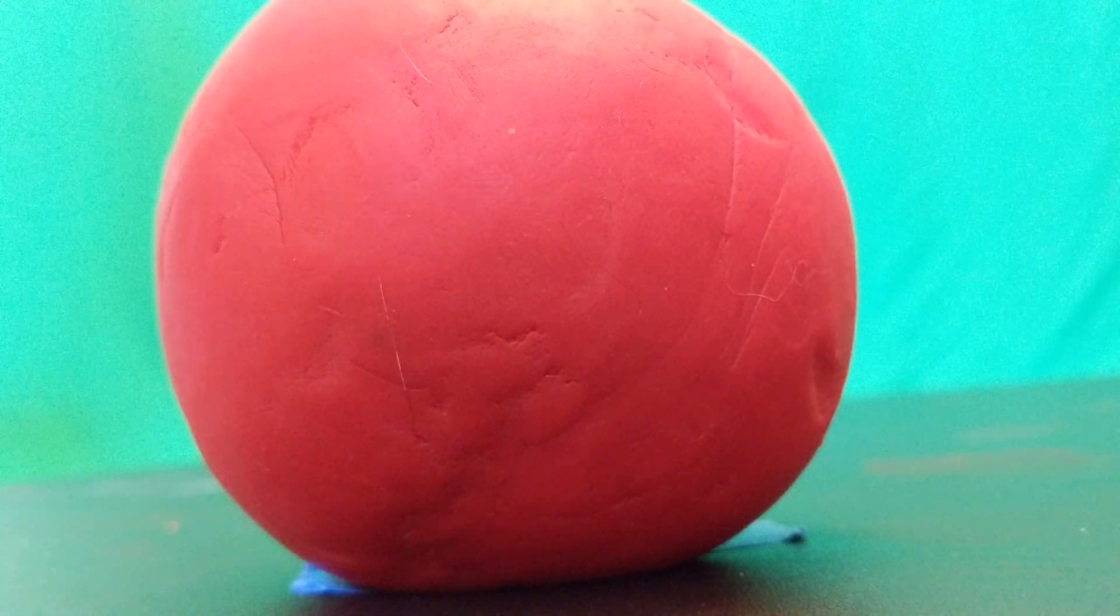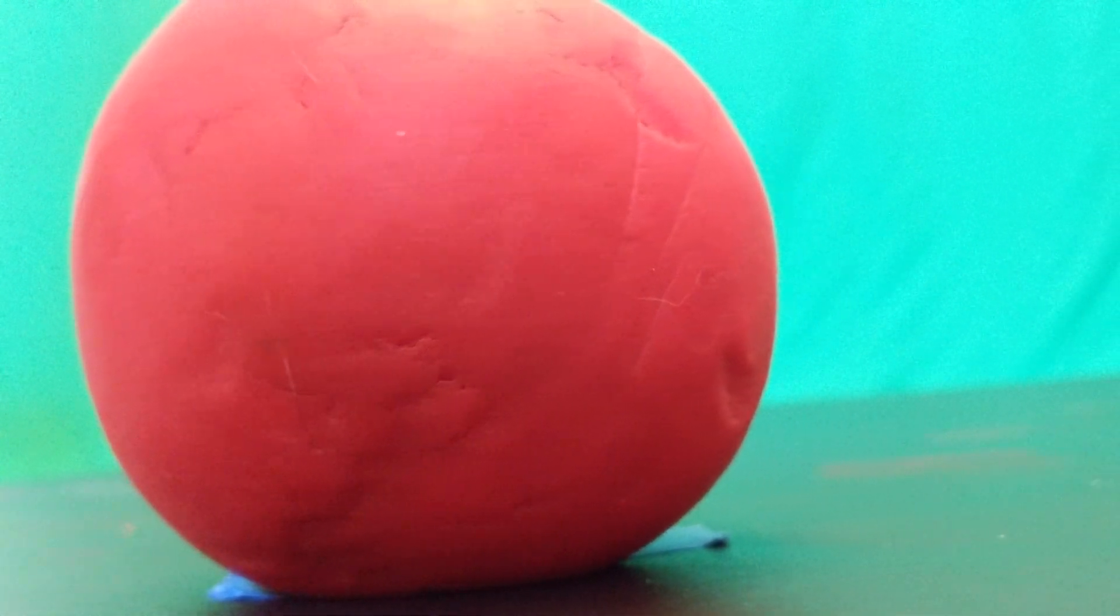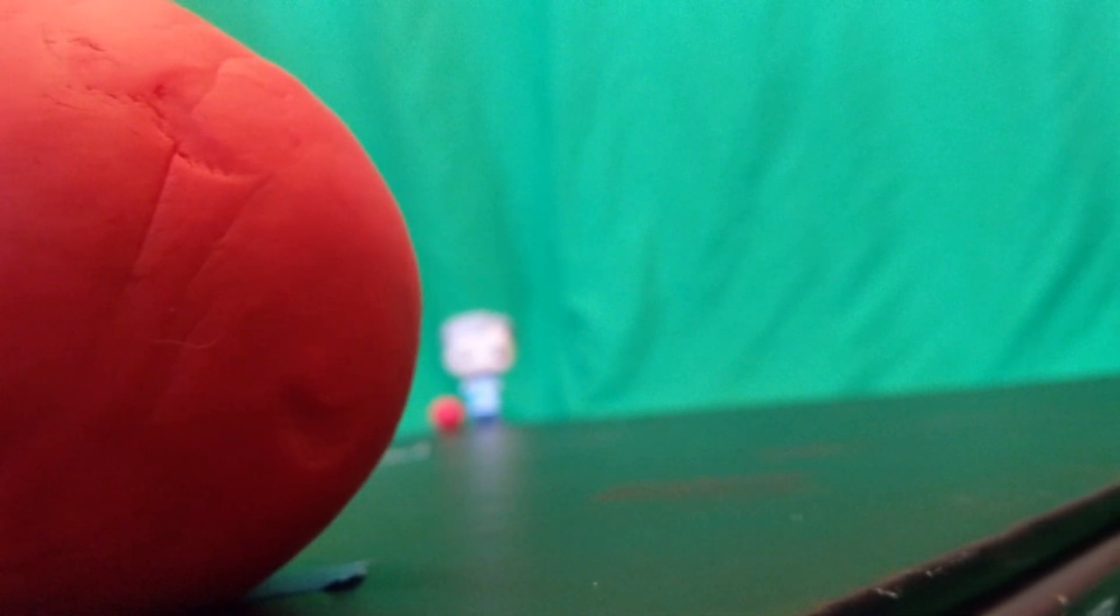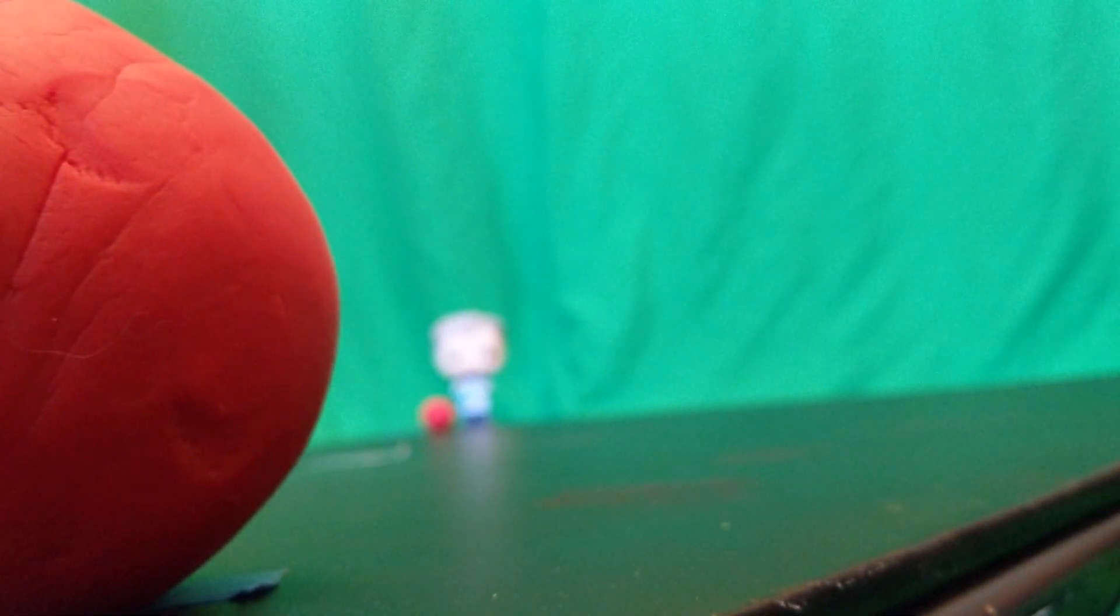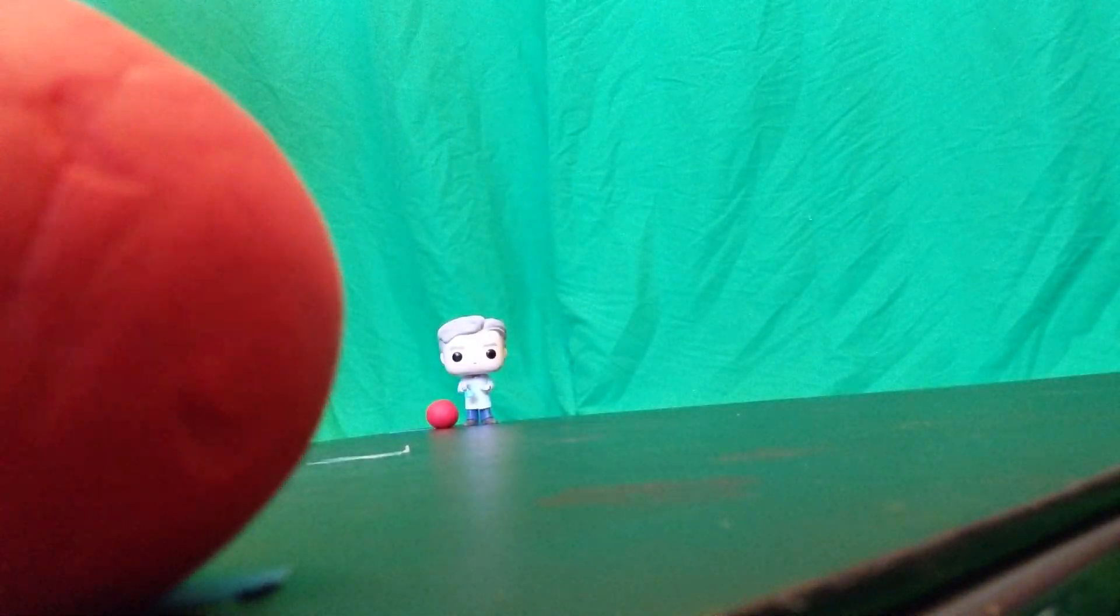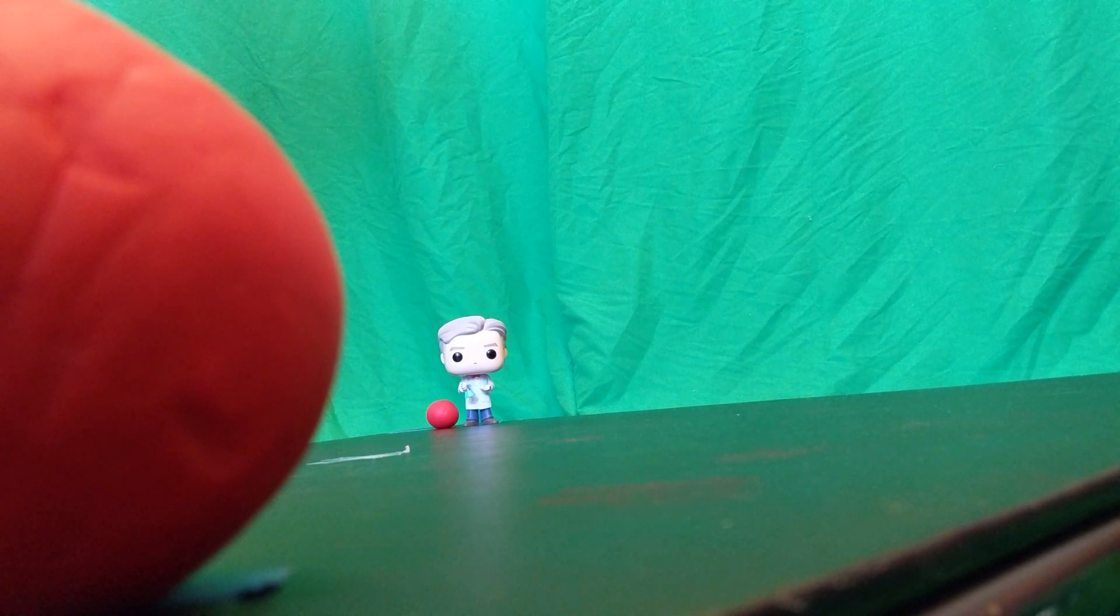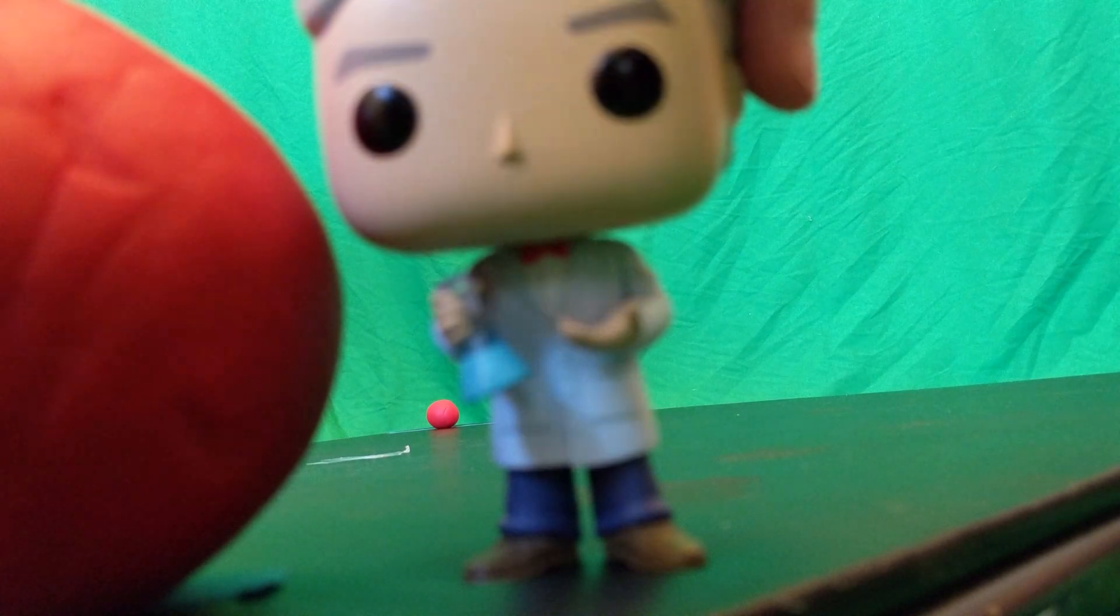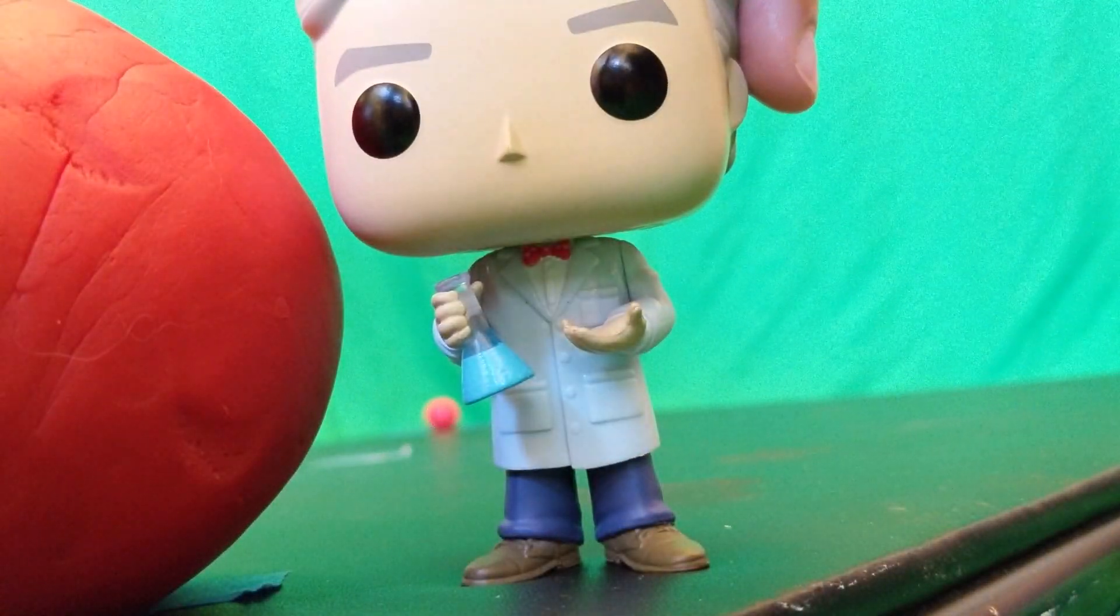Now if we switch perspectives and take a look from the earth to the moon, it looks like how we normally see. I've also moved the Bill Nye for reference so you can see the difference in sizes. And that ends part one.